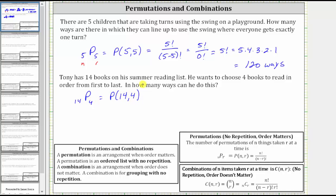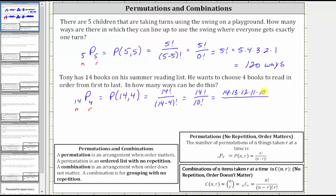Just pick one notation and use it. Here N equals 14 and R equals 4, so 14 permute 4 equals 14 factorial divided by (14 minus 4) factorial, which equals 14 factorial divided by 10 factorial. Expanding 14 factorial: 14 × 13 × 12 × 11 × 10 factorial, divided by 10 factorial. The 10 factorials cancel, leaving 14 × 13 × 12 × 11.